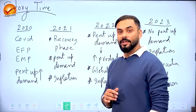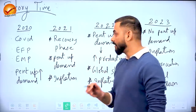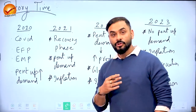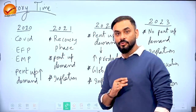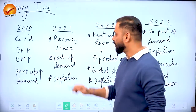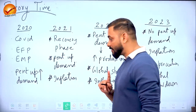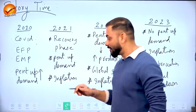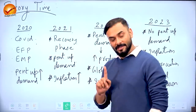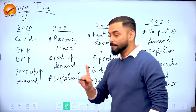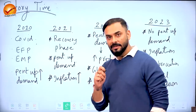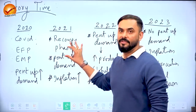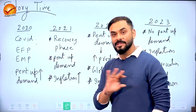Then came 2021 — still COVID phase, but countries including India started the recovery phase. Governments gave more money to people, reduced taxes further, and provided subsidies to industries and MSMEs. Pent-up demand continued because people weren't sure COVID was completely gone. Since central banks had been giving more cash, inflation started slowly — people had cash but there was no supply of goods and services because economic revival hadn't fully happened.